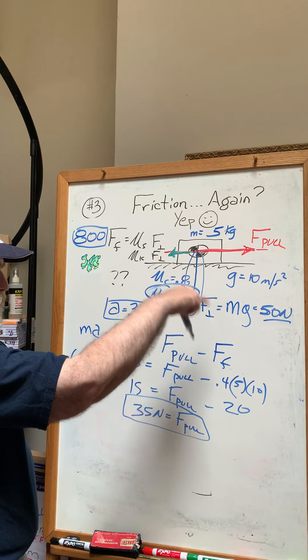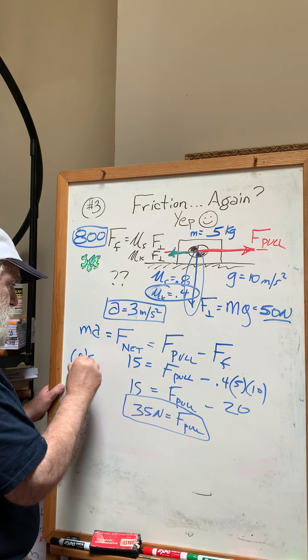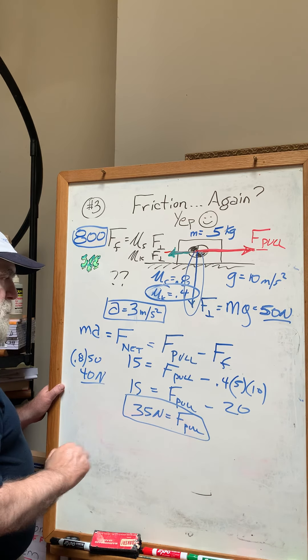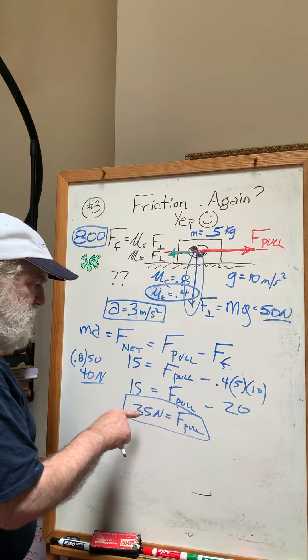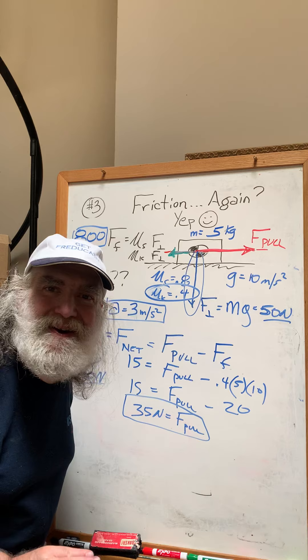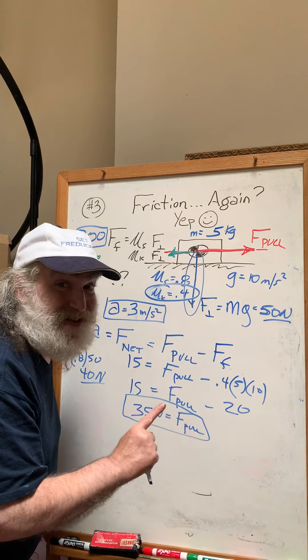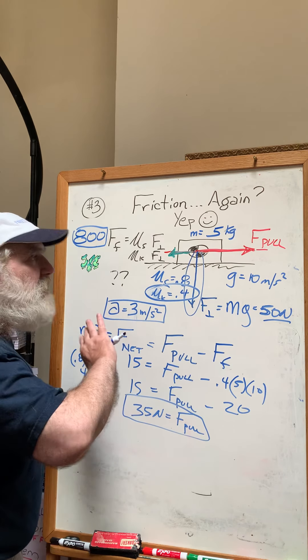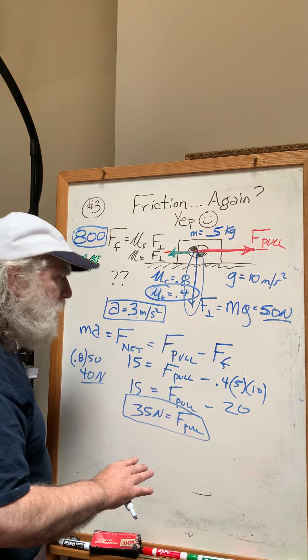Times the normal force, which is 50. And 50 times 0.8 is 40 newtons. Wait a minute—you mean we're pulling with a net force of 35 newtons? I won't even get the box moving. Doesn't matter—they told you it was moving. If they hadn't told you that, you apply whatever force you need to overcome it.